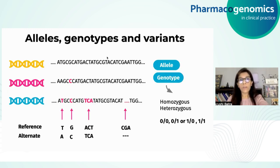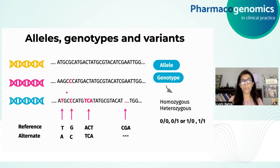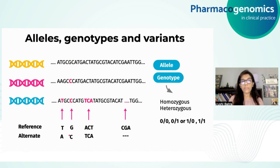Let's look at alleles, genotypes, and variants. Assuming a reference genome and two strands of a genome in a child — one from the mother and one from the father — if at a particular position the reference is T, and the child has one allele T and one allele A, then the alternate allele A is present in the heterozygous form because it is only present on one strand and not both. If the reference is G but both strands of the child contain C, then this mutation is present in the homozygous form.